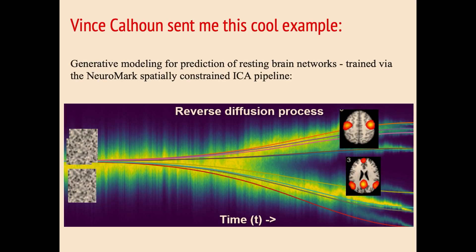Vince Calhoun shared a cool example: denoising diffusion probabilistic models making resting-state networks. You give it a whole lot of resting-state functional data, and the classifier guidance says: please have this resemble the default mode network. To recap, a generative model will make a latent space embedding of training data organized into a continuous distribution you can sample from. The decoder will make the input again or, with classifier guidance, make images resembling a certain class — a disease, a certain age — evolving through the latent space to pick images that are more like a specified category.